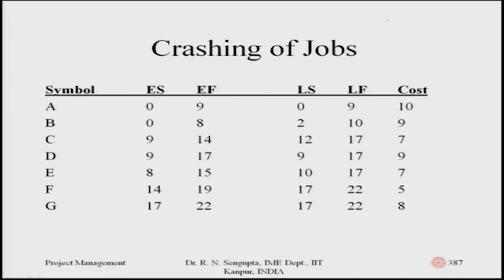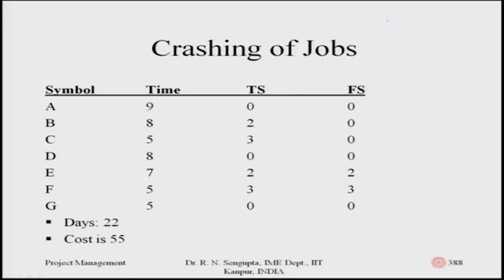Job A has an early start of zero; job B also has an early start of zero. Similarly, C, D, E, F, G have early starts of nine, nine, eight, fourteen, and seventeen respectively. The late starts for A through G are shown in the fourth column. The early finish and late finish for A are both nine, and for G they are both twenty-two — both the early finish and late finish are twenty-two.